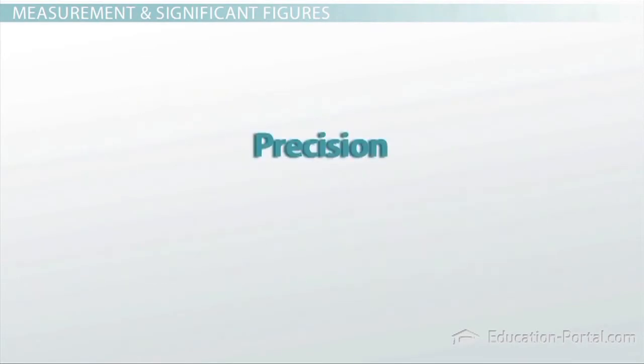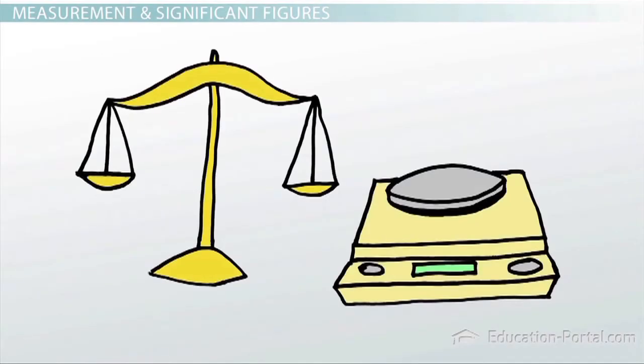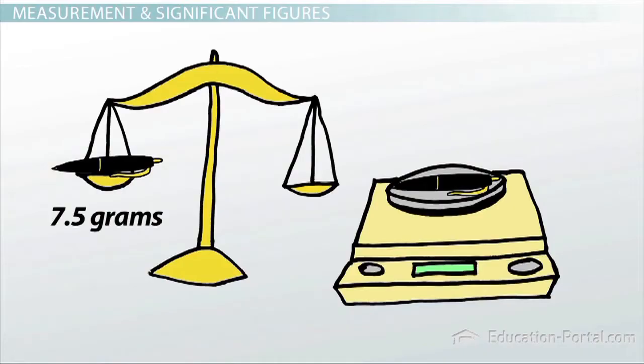The precision of an instrument refers to the smallest repeatable digit that the instrument can measure to. For example, if you are measuring the mass of a pen and one balance reads 7.5 grams, while another, more precise balance, measures 7.50 grams, the second balance will give you a more precise measurement.